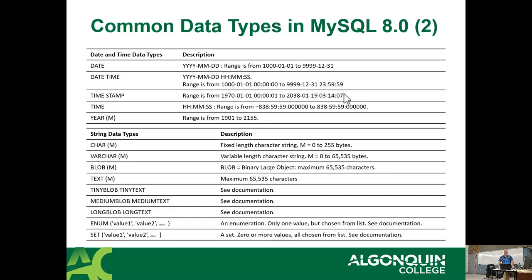MySQL has date, datetime, timestamp, time, and year types. Obviously a date is a date, a year is a year, time is time. Datetime and timestamp are different in MySQL — datetime goes from year 1000 to 9999, while timestamp starts at 1970. The key thing about MySQL timestamps is that every time you touch the record — update or insert — it automatically changes the timestamp field. It's literally meant to keep track of when that record was changed. You don't want the database automatically changing things on you unless that's part of the design plan.